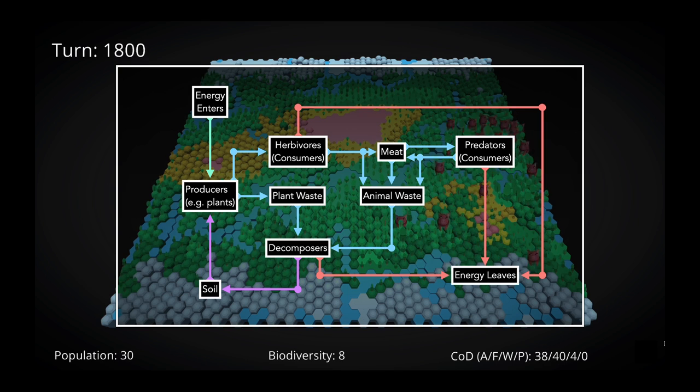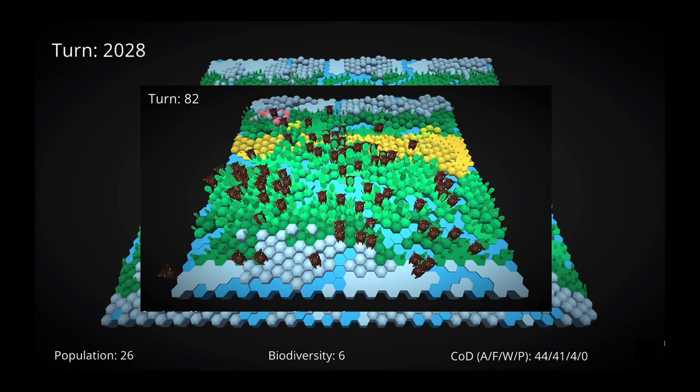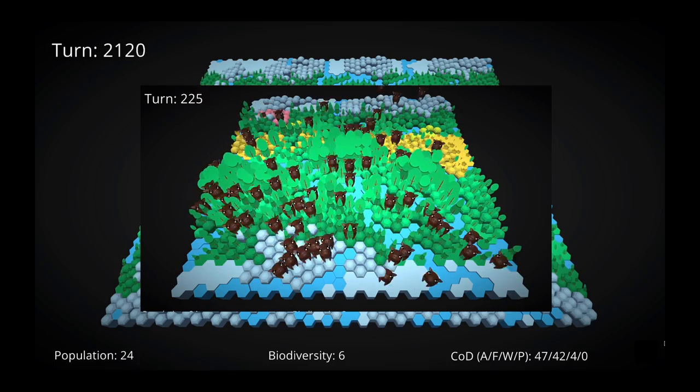In reality, energy should also leave the system at the producer stage. But this is handled in code by simply assuming that the amount of energy which enters the system is the net amount rather than the total. To see this in action, we're going to change the size of plants on tiles based on two factors: the current plant mass on the tile, and the current rate of regrowth.